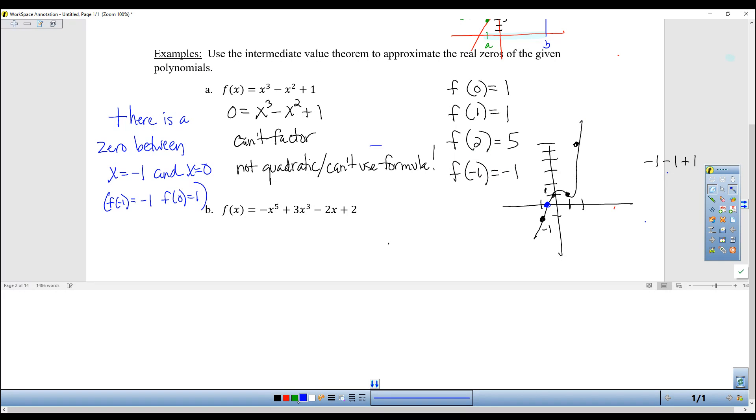All right, we'll do one more. This is a fifth power. I can't factor it. It's not quadratic. I can't use the formula. So I'm literally going to be checking some points. I always do the easy ones. f of 0 is 2. Actually, I'm going to do it differently in case it works better for some people. I'm just going to do it this way.